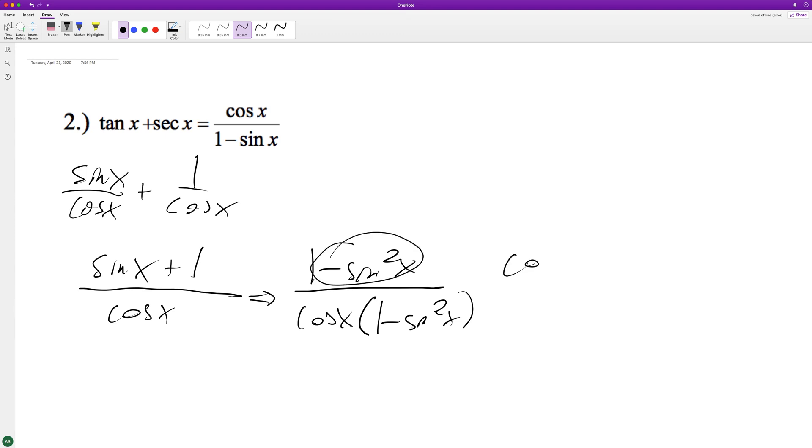Turn this into cosine squared of x, this just becomes cosine of x. I know I'm kind of jumping around here.